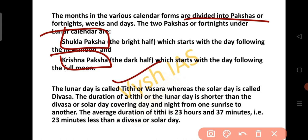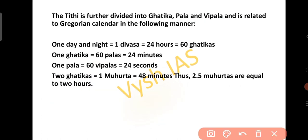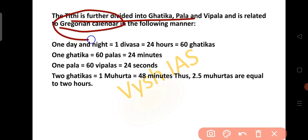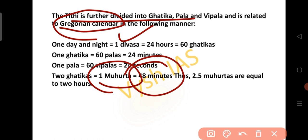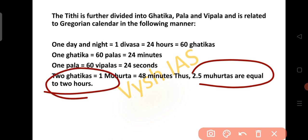The lunar day is called Tidhi or Vasara, whereas the solar day is called Divasa. The duration of Tidhi is shorter than that of Divasa, covering day and night from one sunrise to another. The average duration of Tidhi is 23 hours and 37 minutes, which is 23 minutes less than the Divasa or solar day. The Tidhi is further divided into Gatika, Pala and Vipala. One day and night equals one Divasa of 24 hours, that is 60 Gatikas. One Gatika equals 60 Palas, that is 24 minutes, and one Pala equals 60 Vipalas, equal to 24 seconds. Two Gatikas equal 1 Muhurta, which is 48 minutes.